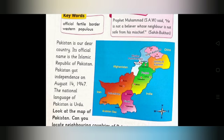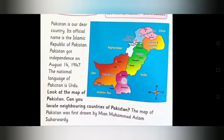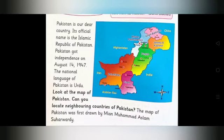Now look at the map of Pakistan. Can you see the neighbor countries of Pakistan? Pakistan ki neighbor countries map mein kaun kaun si hain — Afghanistan, Iran, India, and China. The map of Pakistan was first drawn by Mia Muhammad Aslam Sohrawardi. Pakistan ka jo naqsha hai, wo sabse pehle Mia Muhammad Aslam Sohrawardi ne banaya.